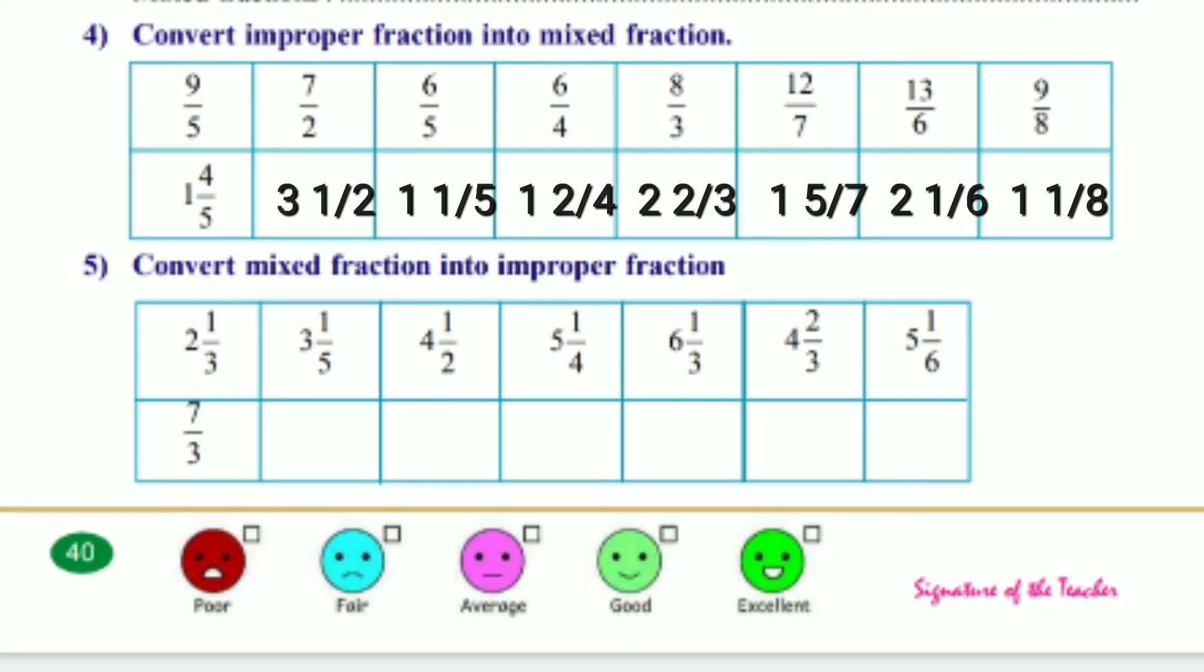Fifth one, Convert Mixed Fraction into Improper Fraction. 2, 1 by 3 equals 7 by 3. 3, 1 by 5 equals 16 by 5. 4, 1 by 2 equals 9 by 2. 5, 1 by 4 equals 21 by 4. 6, 1 by 3 equals 19 by 3. 4, 2 by 3 equals 14 by 3. 5, 1 by 6 equals 31 by 6.